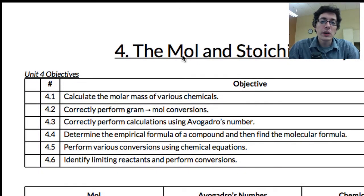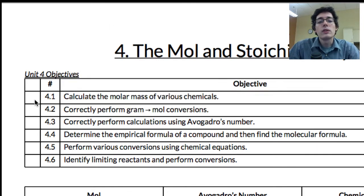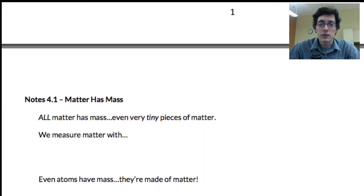Hello everyone, welcome to chapter 4. We are getting into this thing called the mole, like the animal. Well, not like the animal, it's pronounced like the animal. But anyways, we're getting into the mole and this thing called stoichiometry, which is a fancy way to say chemical conversions. Before we can do that, we need to do a little bit of review, so we're going to start right here with objective number 1, looking at the masses of different chemicals.